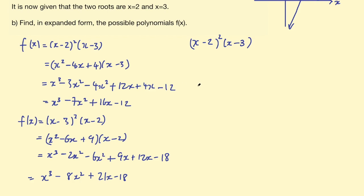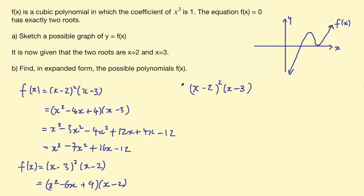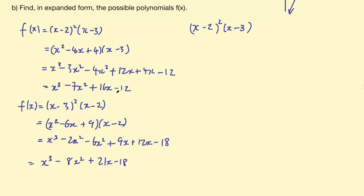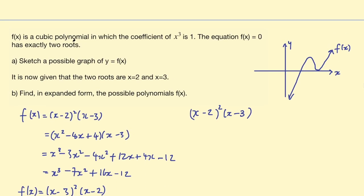All right, so there you go, that is an interesting question on cubics. Again, final answers: x³ - 7x² + 16x - 12 and x³ - 8x² + 21x - 18. Important things to take away from this is that if you're told it has two roots, one of those factors is going to be squared.